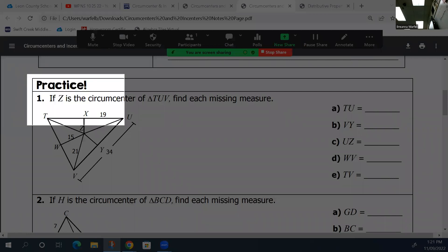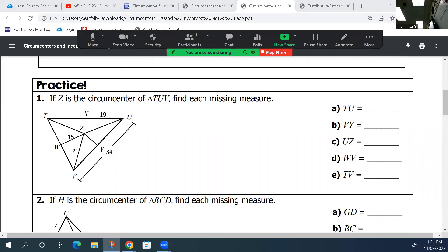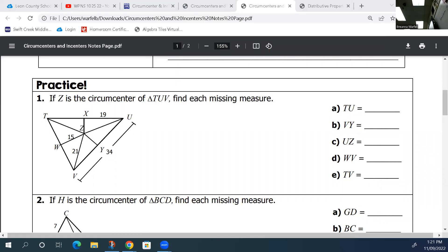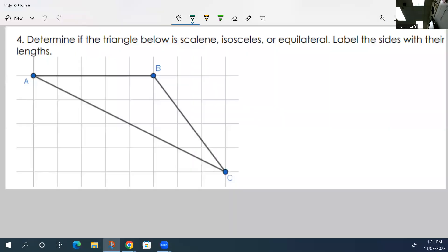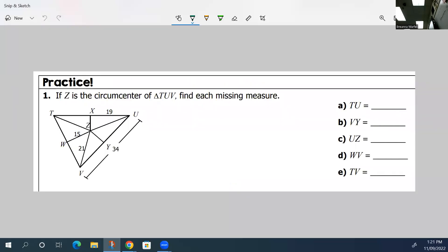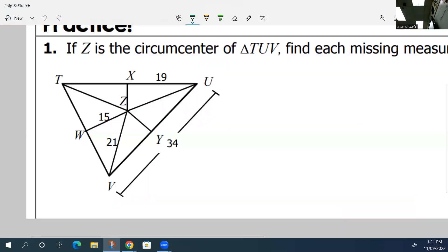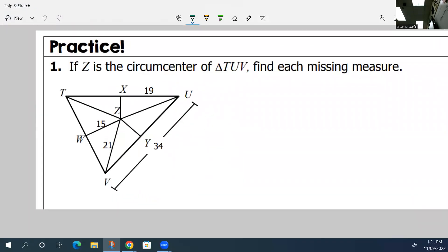So number one, let's look at what we have. We know that Z is the circumcenter. That means that Z was created by perpendicular bisectors. That means the bisecting part, this is congruent to this side. So that means that's 19. I haven't even looked at what we need on the problem yet. I'm just going to label all the things that I already know.